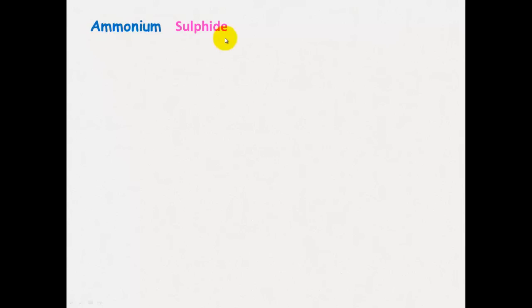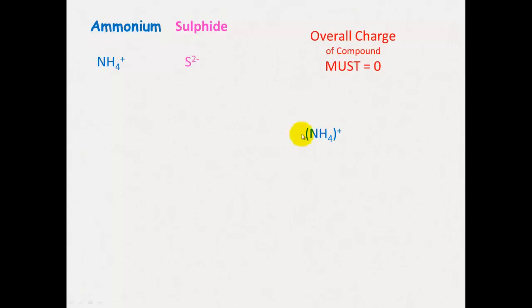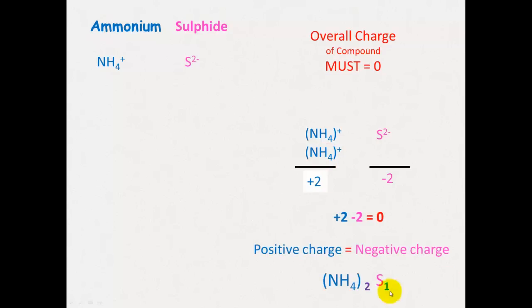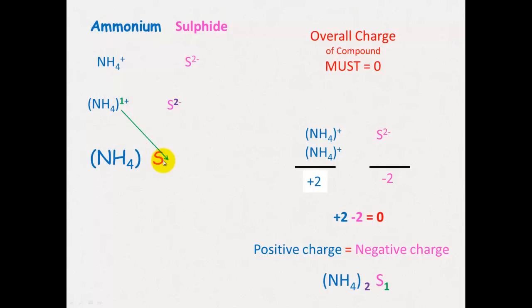For ammonium sulfide, this example shows how to keep polyatomic ions in brackets. Ammonium is a polyatomic ion — several atoms in one ion — so you put brackets around it with the charge on the outside. Ammonium has a 1+ charge and sulfide has a 2− charge, so you need two ammonium ions. Write it as (NH₄)₂S — the ammonium in brackets with a subscript 2, and sulfide gets a subscript 1, which you don't need to write. Using the cross method, there's a 1 next to sulfide and a 2 next to ammonium.